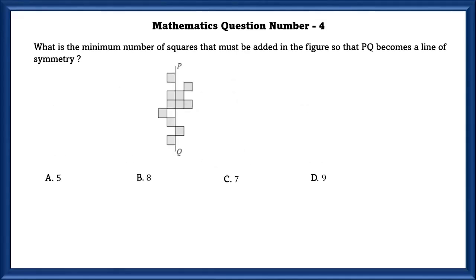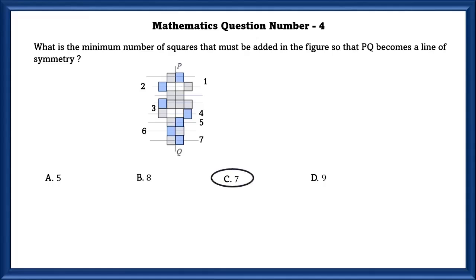Mathematics question number 4. What is the minimum number of squares that must be added in the given figure so that PQ becomes a line of symmetry? In order to make this part symmetrical, squares need to be added at several positions — one here, one here, one here, one here, one here, and two more here — which totals to 7. So 7 squares must be added.